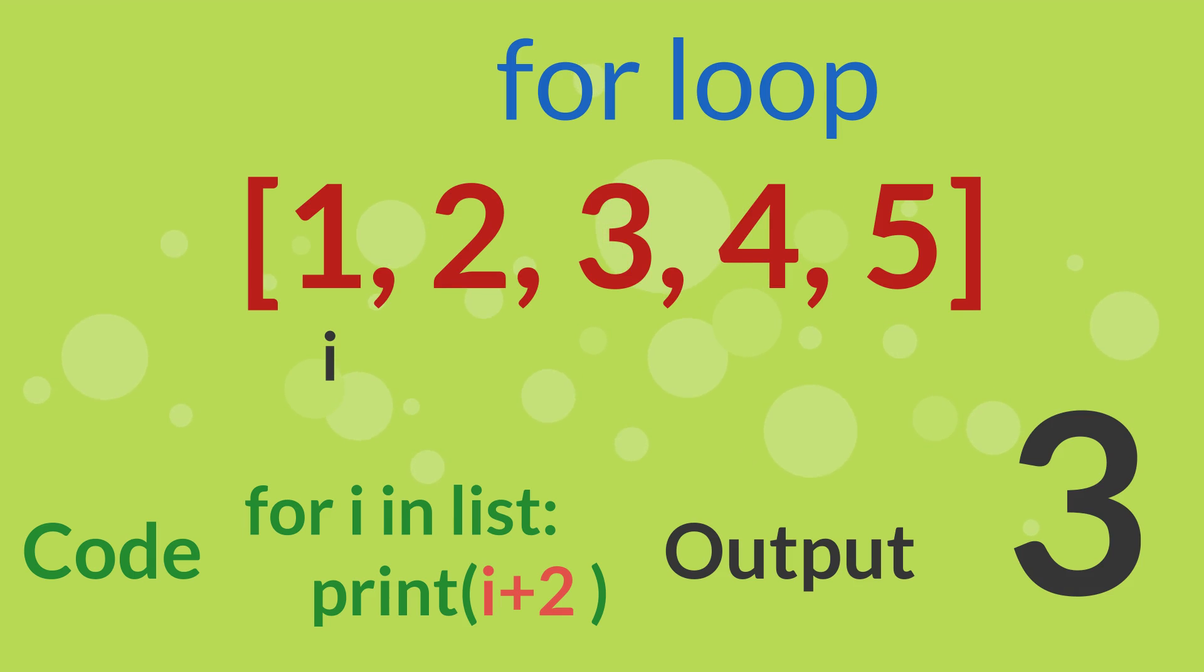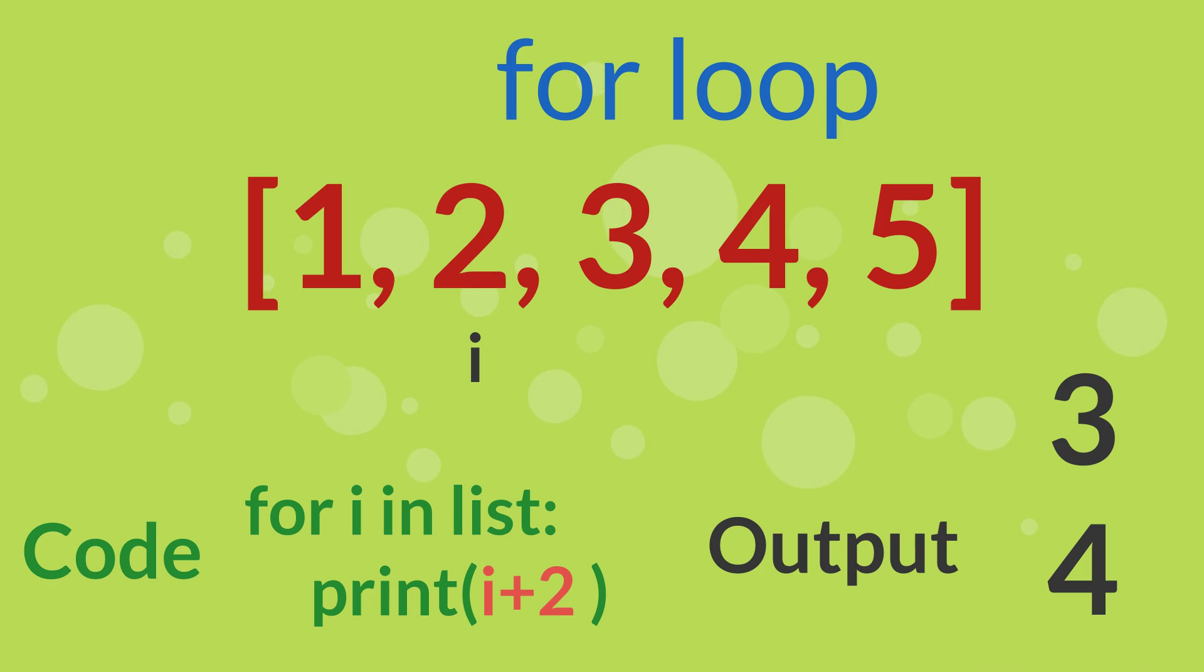Let's say we want to add 2 to each list item. We can do print i plus 2. When i reaches 1, it will print 1 plus 2, which is 3. When i reaches 2, it will print 2 plus 2, which is 4. When i reaches 5, which is the end of the list, it will print 5 plus 2, which is 7.